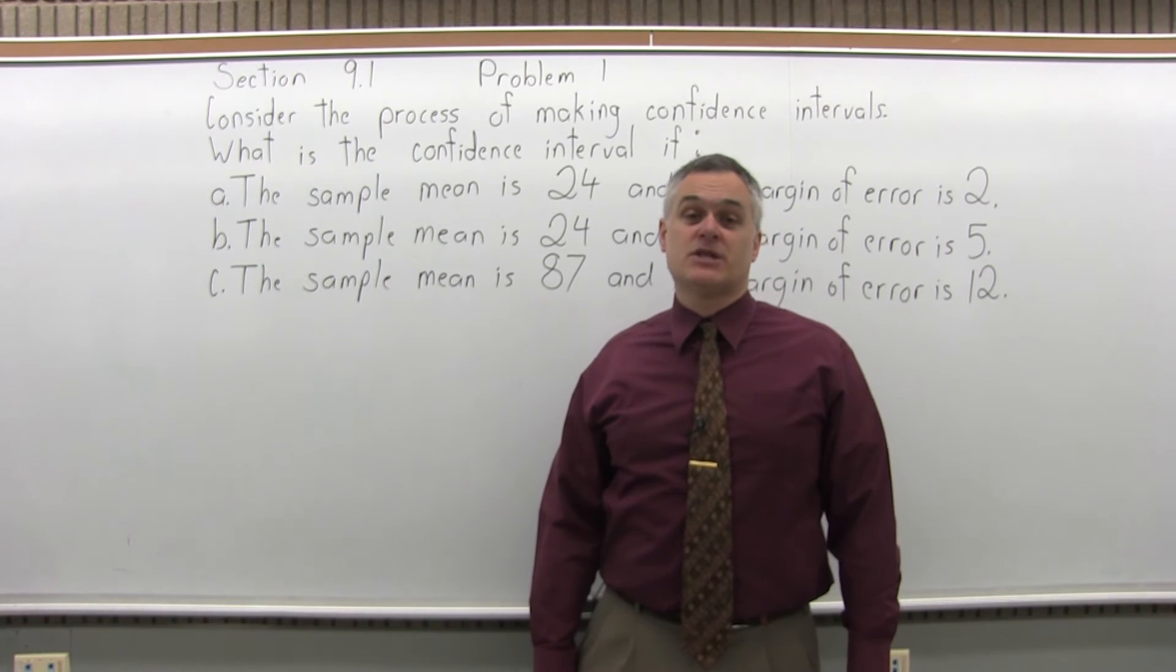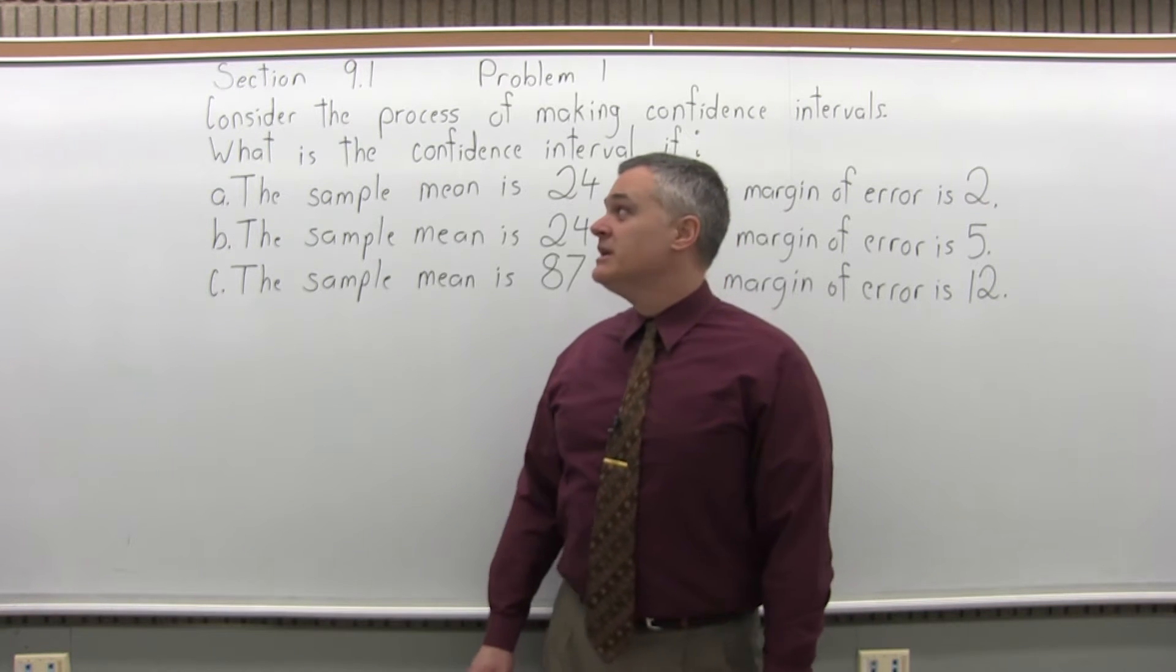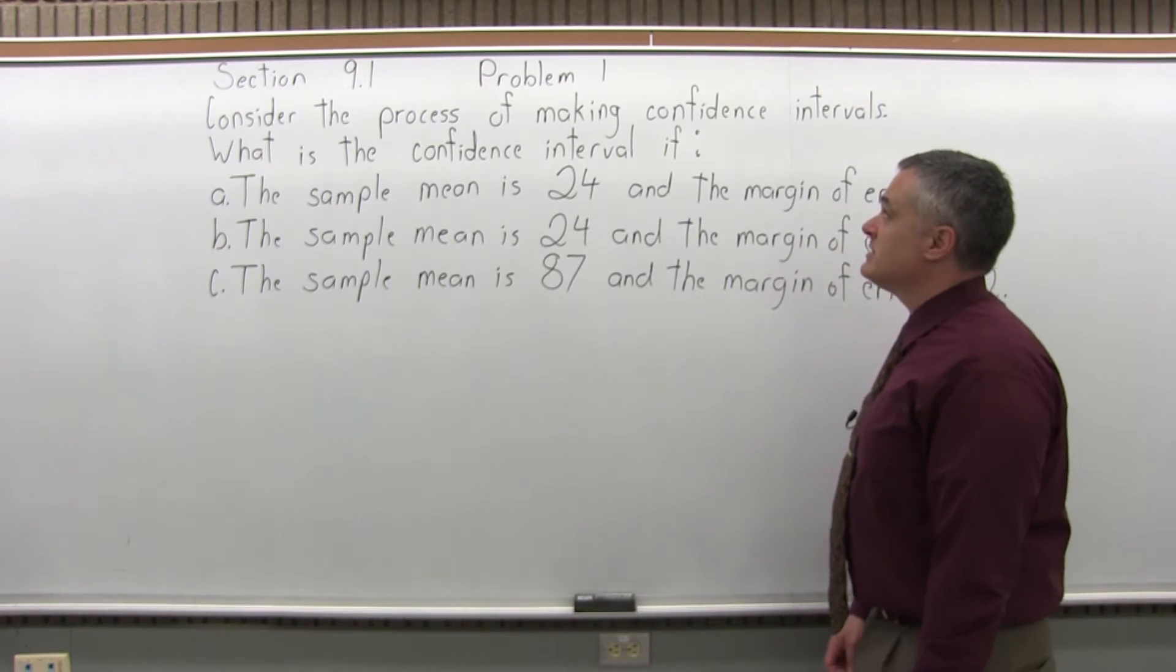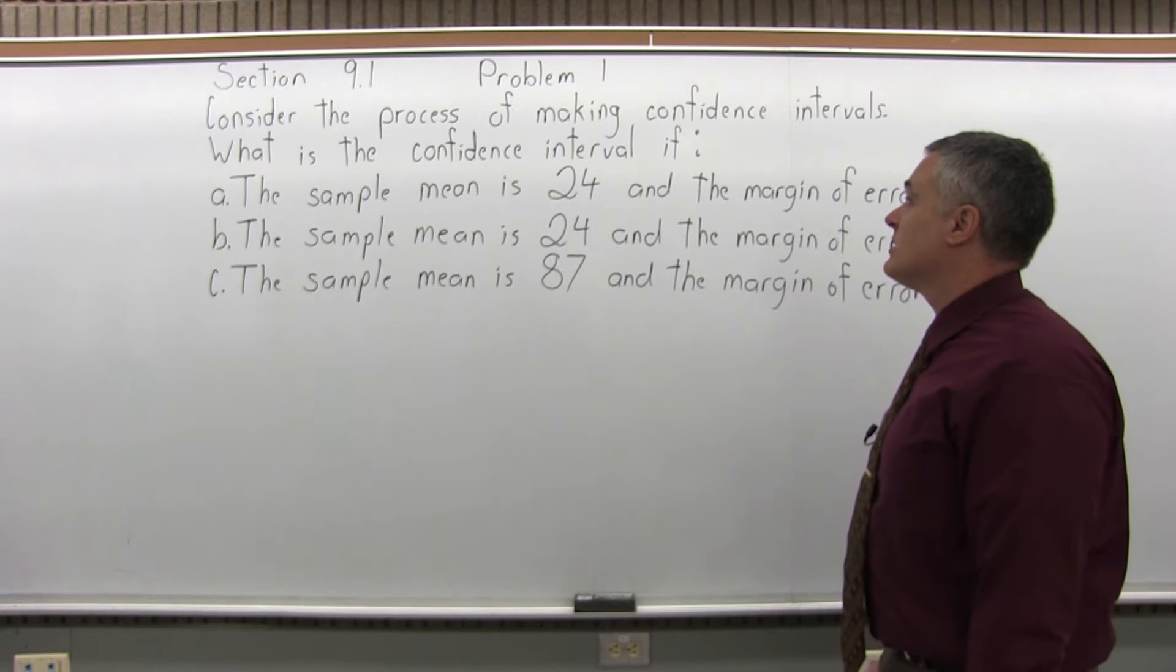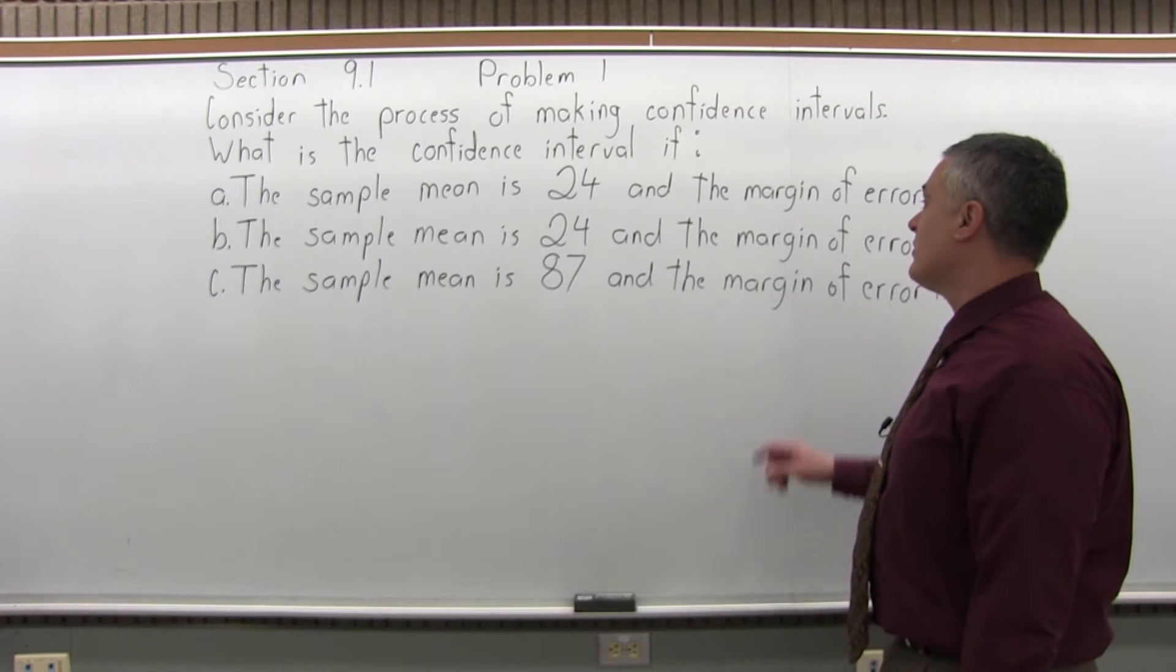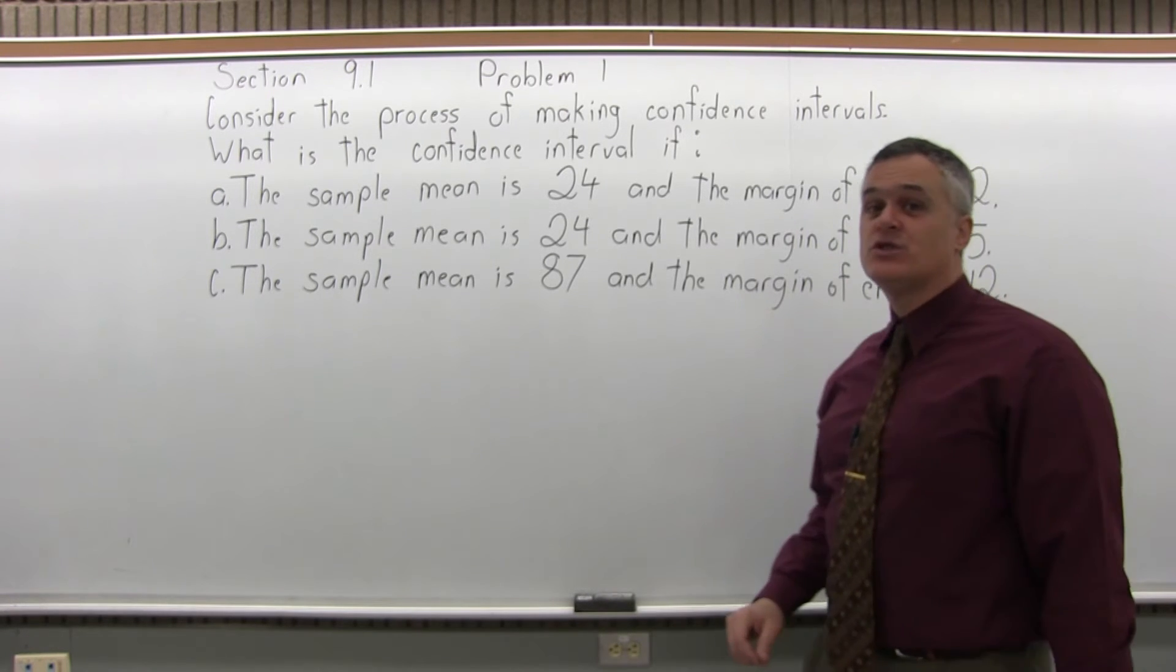This is Section 9.1, Problem 1. It says, consider the process of making confidence intervals. What is the confidence interval if the sample mean is 24 and the margin of error is 2?